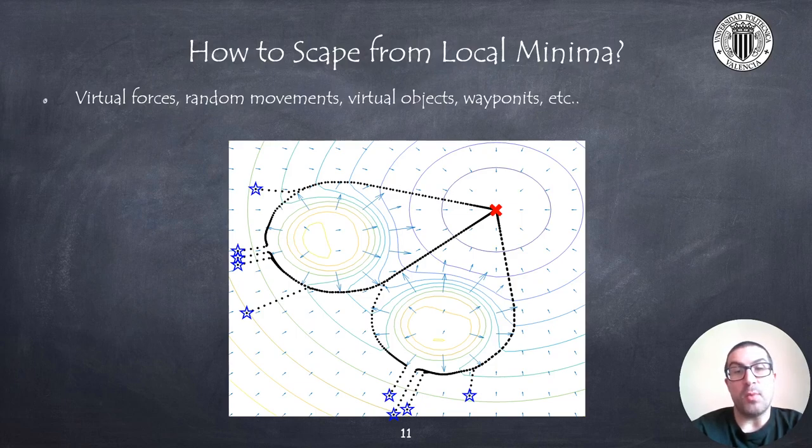Here we observe what happens if we apply a small perpendicular force whose magnitude increases if we detect that the robot is moving slowly and we are still far from the goal.